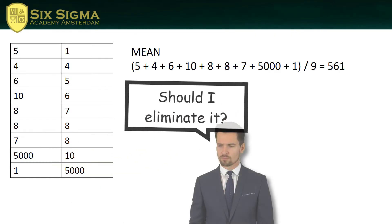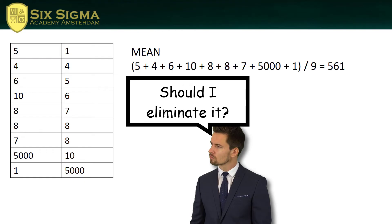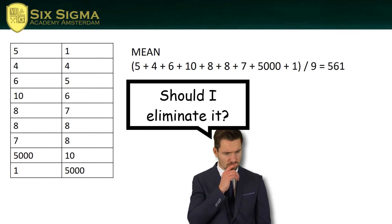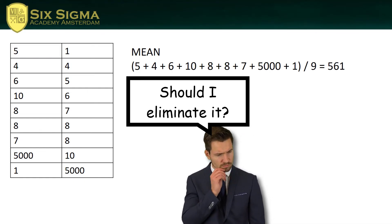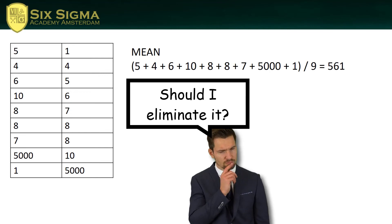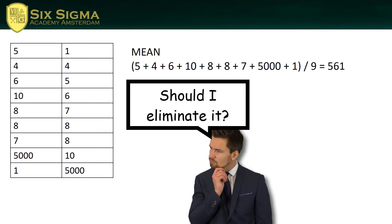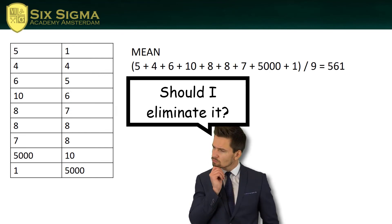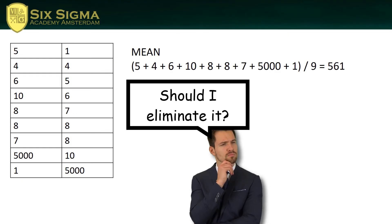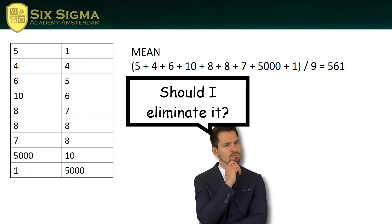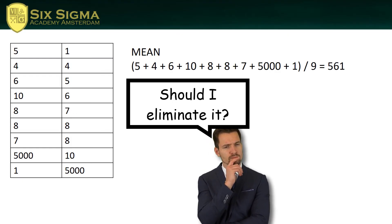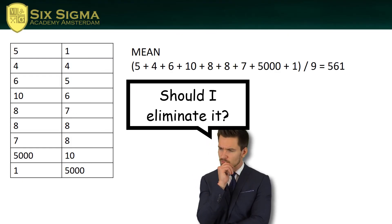Once you've found out that the $5000 is indeed an extreme value causing this difference, you have to decide: do I eliminate the $5000 or not? Do not eliminate it if it is just part of your data. For example, if we have here a group of nine people...